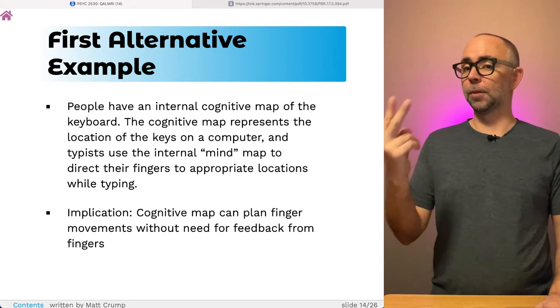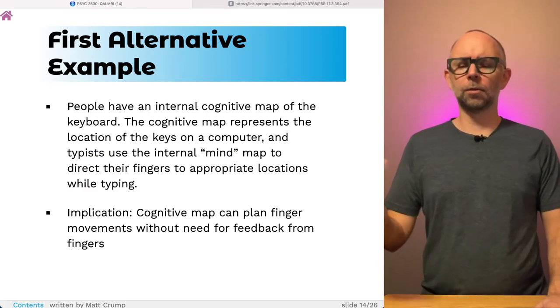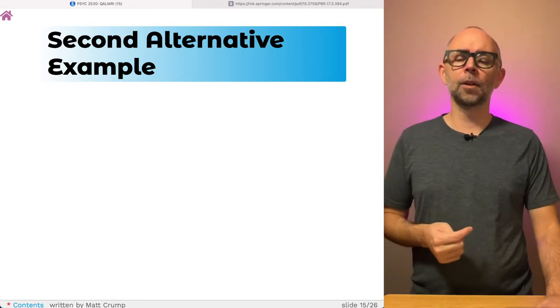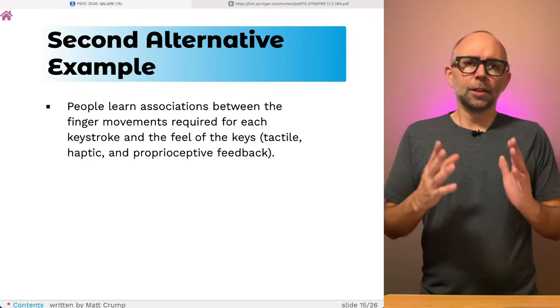An implication of this idea is that this cognitive map that I'm using should be able to plan finger movements. It should be able to send my fingers to different places without needing feedback from what my fingers are actually doing. And if that's true, maybe I don't need to feel the keyboard. If I didn't have a keyboard and I just could somehow do air typing, I would be able to type just fine because my map knows where my fingers need to go. This is a first alternative. We could come up with more. We could come up with a second one. We could come up with lots more. Let's come up with a second one.